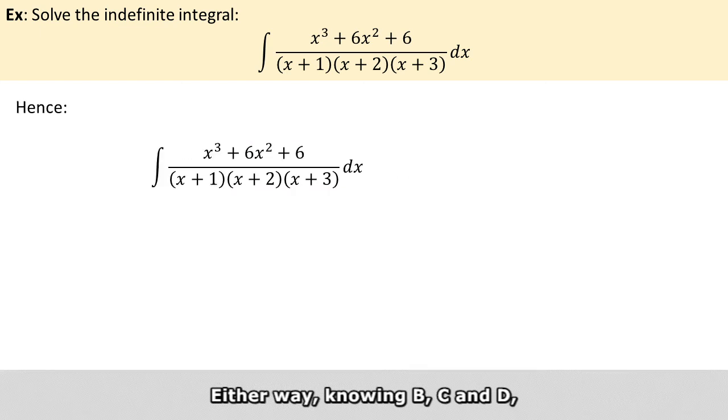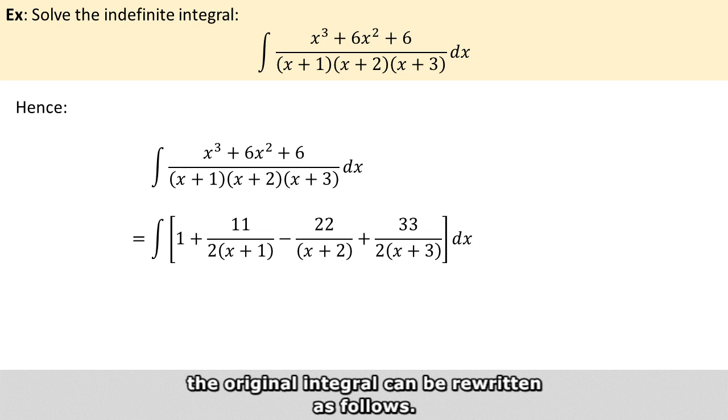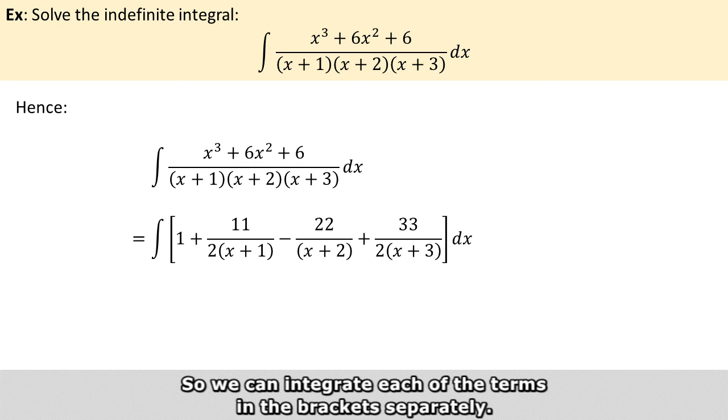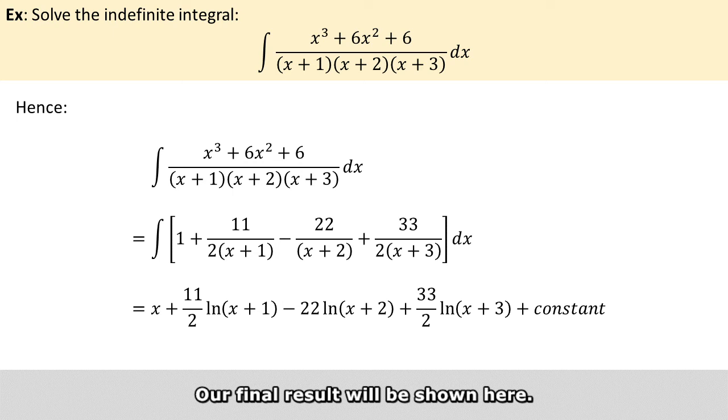Either way, knowing B, C, and D, the original integral can be rewritten as follows. The integral of sum is the same as the sum of integrals. So we can integrate each of the terms in the brackets separately, and our final result will be shown here.